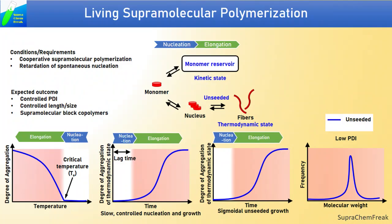Parallel to living polymerization in covalent polymers, a new field in supramolecular chemistry has begun called living supramolecular polymerization. It deals with control over the supramolecular polymerization process for narrow dispersity, controlled length or size of polymers, and formation of supramolecular block copolymers, which otherwise was not possible.